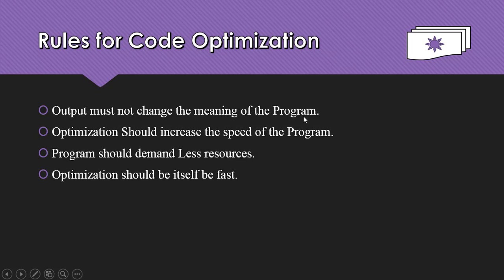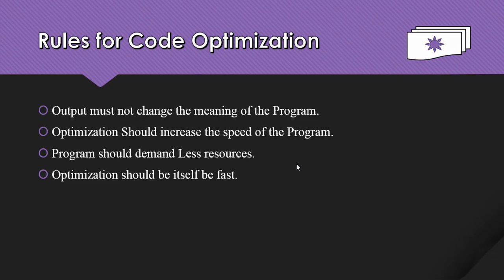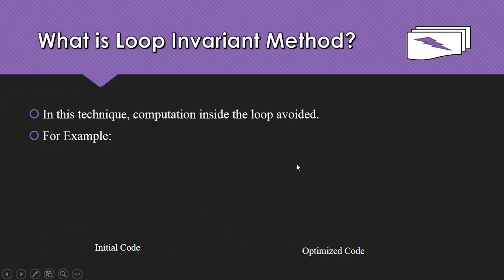As mentioned previously, some rules about code optimization: it should not change the meaning of the program. Keep in mind during optimization what type of optimization you are doing on the source code — the meaning of the program should not be changed. Next is the loop invariant method.